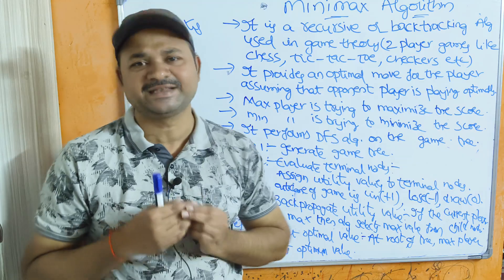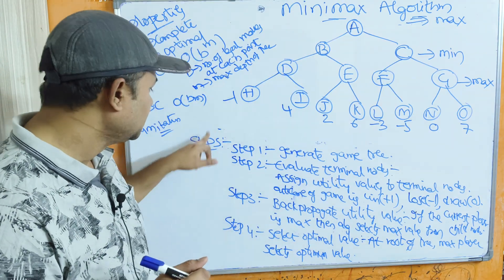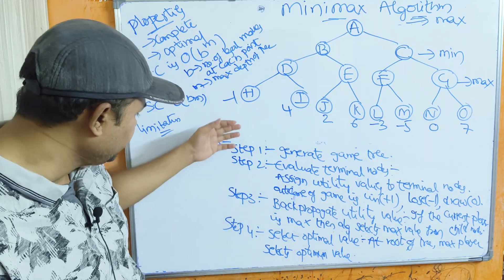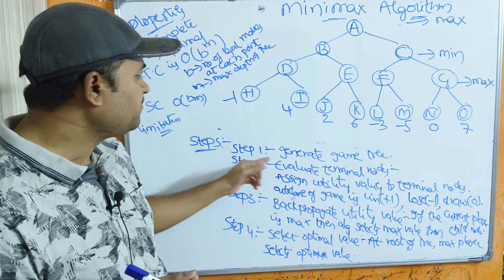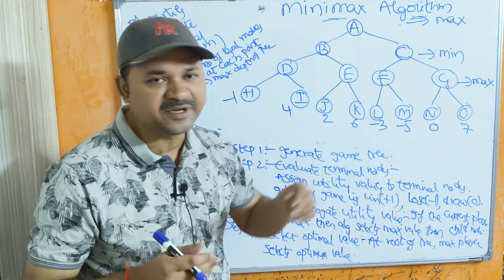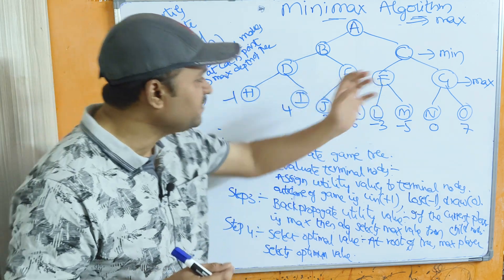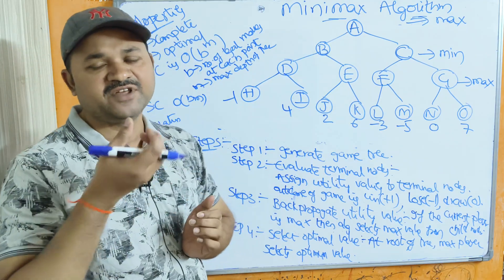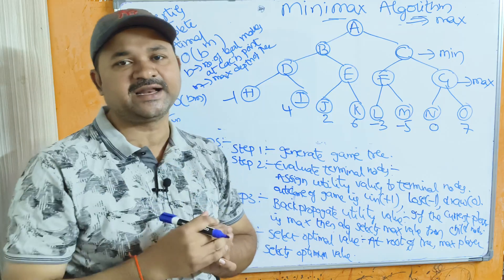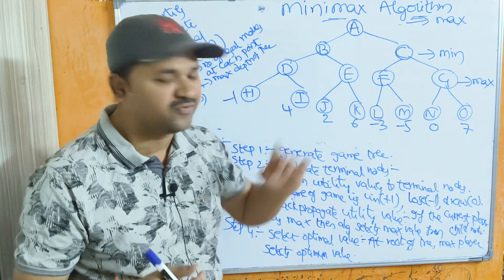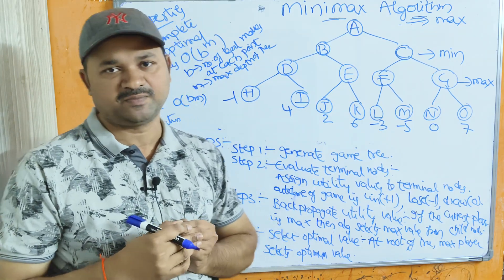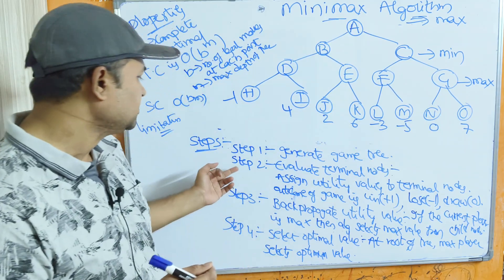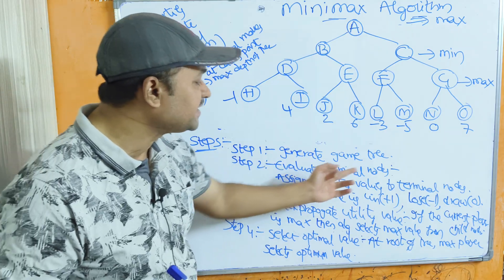Let us solve this problem using the algorithm. There are four steps. Step one: generate the game tree. In an examination, a game tree may be given, or if asked to explain Minimax, you take one game tree and solve the problem. The game tree contains all the possible moves.